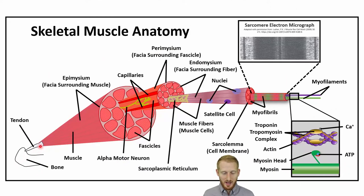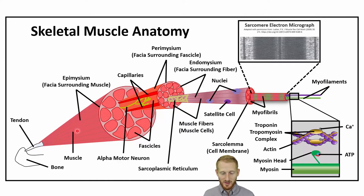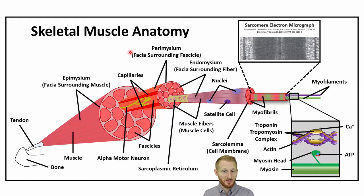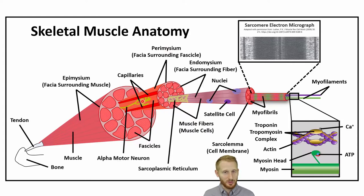Starting here with the bone on the left-hand side and the tendon that is integrated into the bone as well as into the muscle. Around the muscle as well as within the muscle, you have fascia. Fascia is just connective tissue that kind of holds everything together, and it also is what comes together to create the tendon at the end of the muscle. Around the outside of the entire muscle, that fascia is called the epimysium.